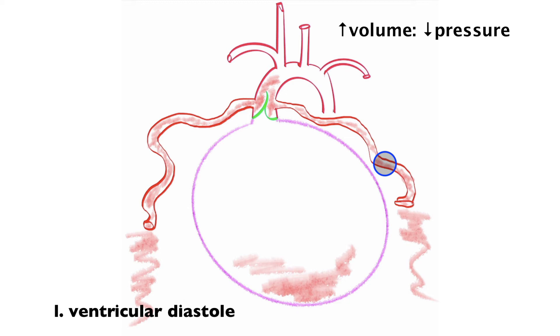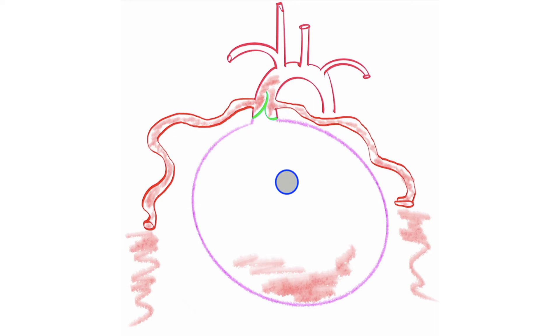During left ventricular systole — contraction of the left ventricle — blood is being perfused throughout the whole body: oxygen-rich blood is being distributed through the systemic circulation up to the brain, down to the big toe, to all the organs in the abdominal and pelvic cavity. But during left ventricular systole, blood is NOT being delivered to the myocardium. Blood is delivered to the myocardium during left ventricular diastole, when the left ventricle is in the relaxed state, because blood backs up in the aorta and has access to the openings of the coronary arteries.